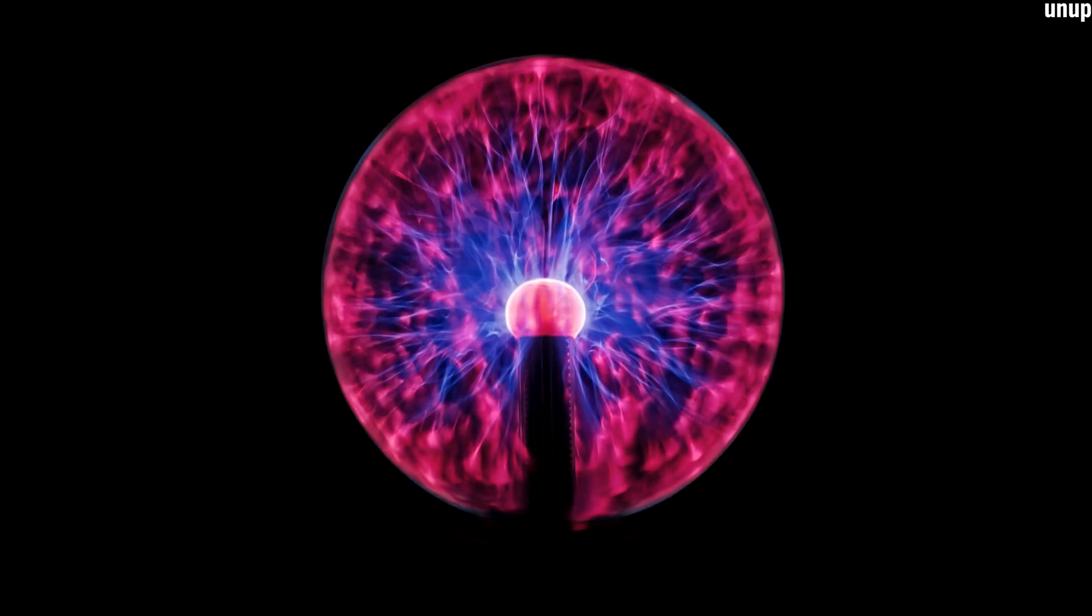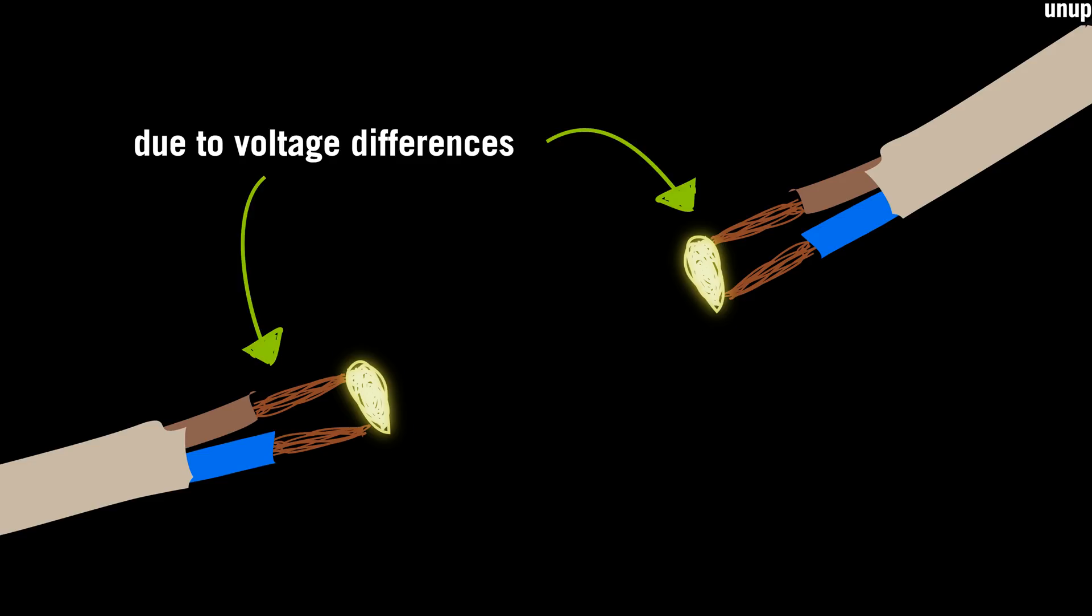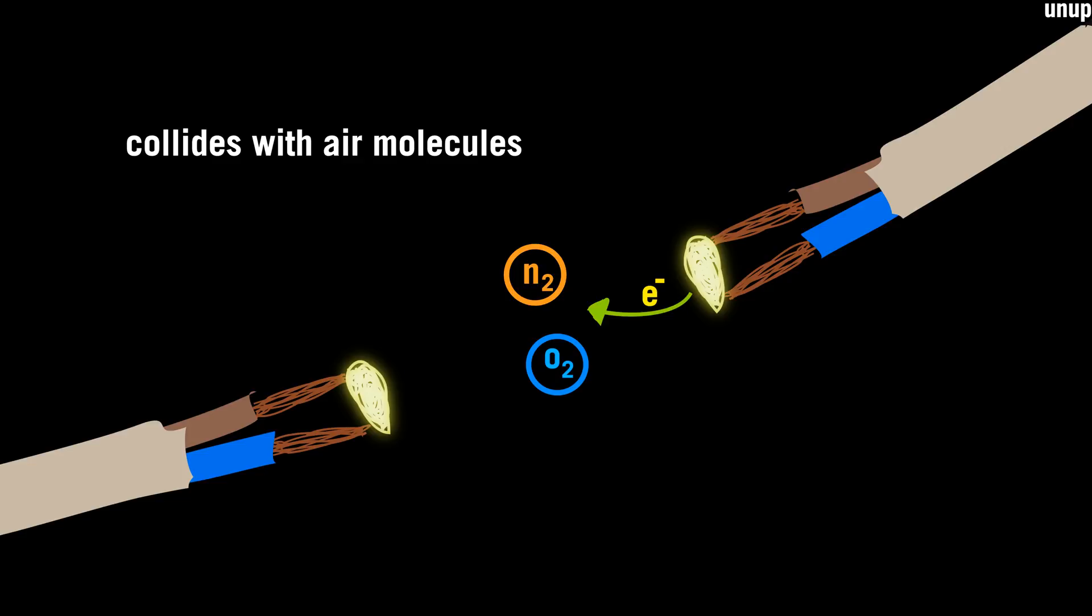How electric sparks actually occur: for an electric spark, a high electric field is needed due to voltage differences. The high electric field is created and an electron is discharged into air and collides with the air molecules.